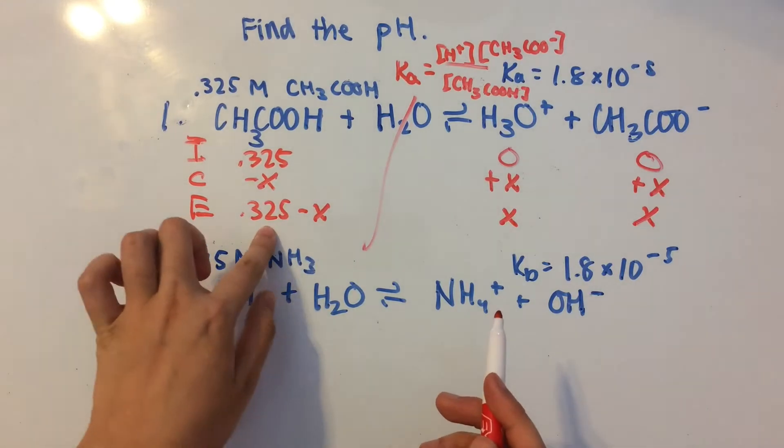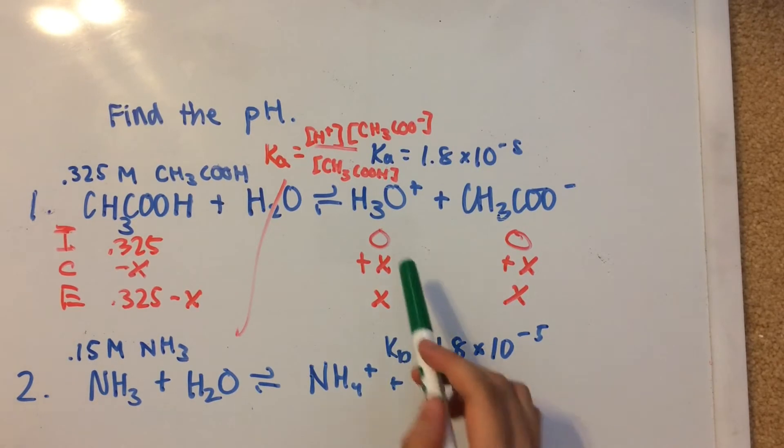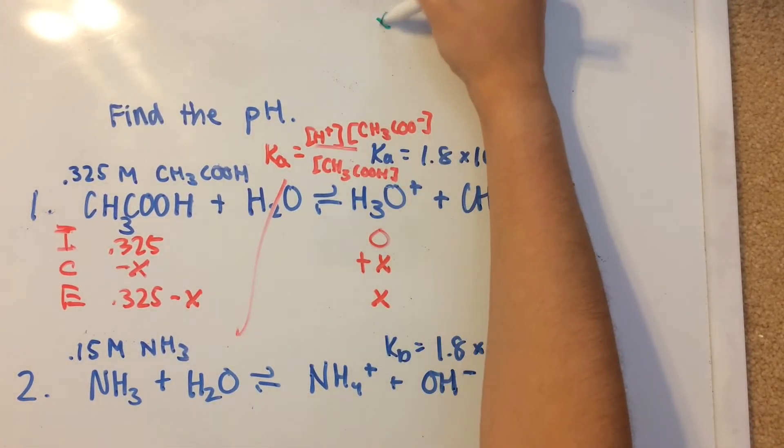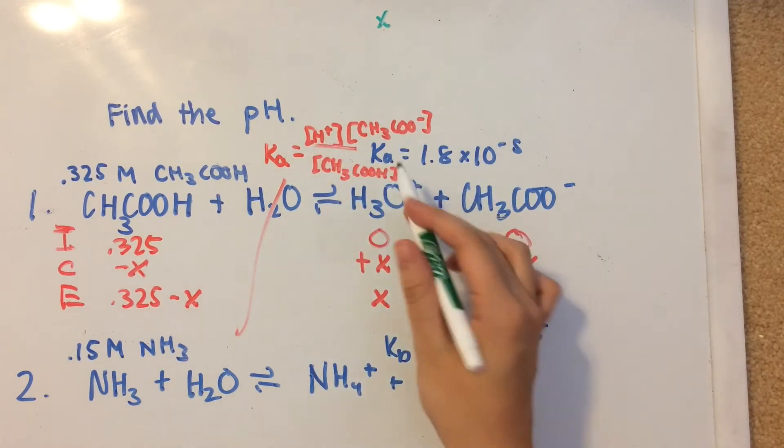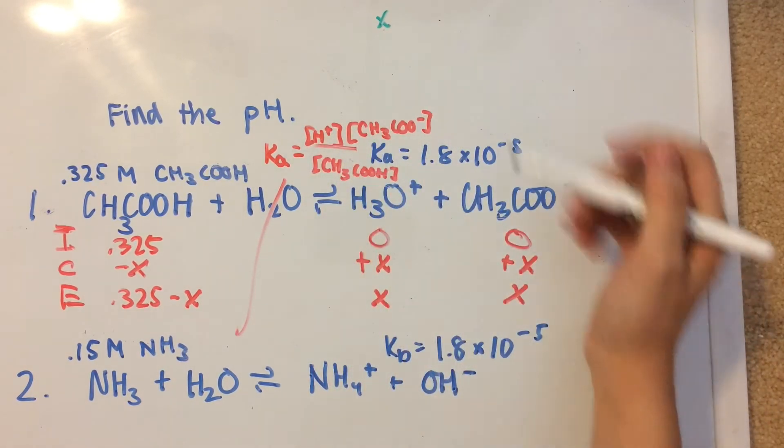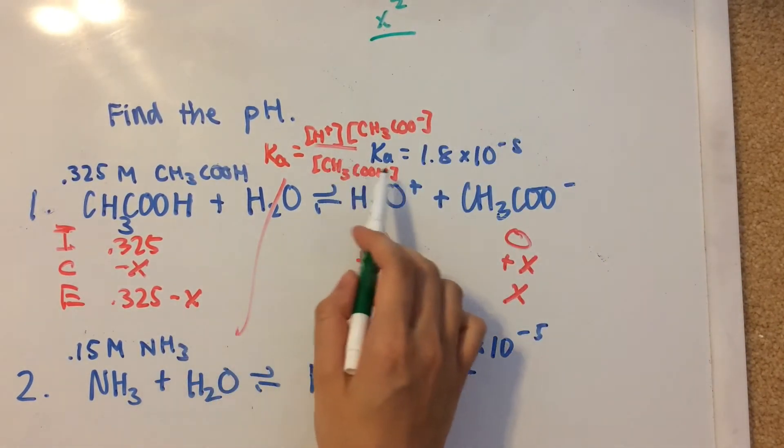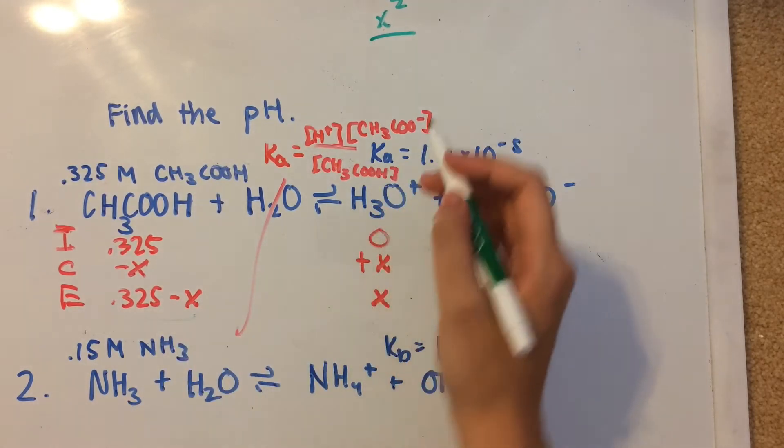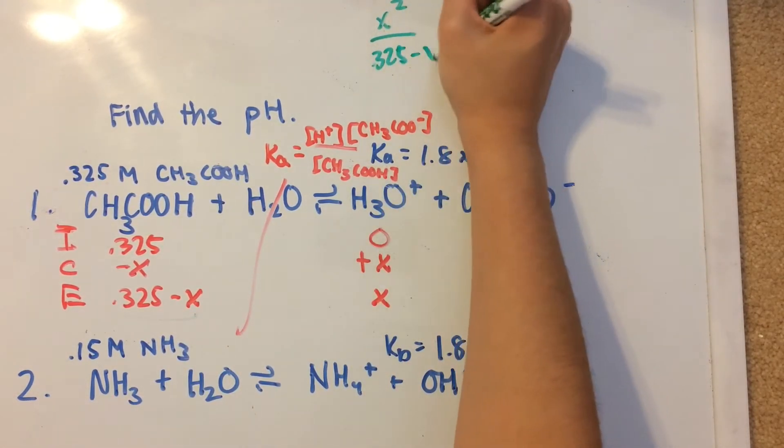So then we can plug these values into here and then solve for each of them. So the concentration of H plus at equilibrium will be x. And then I see next we're going to multiply that by the concentration of acetate, which is also x. So x times x is x squared. And then we're going to put that over concentration of CH3COOH, which is 0.325 minus x.